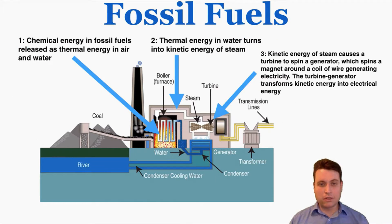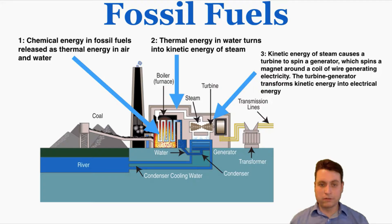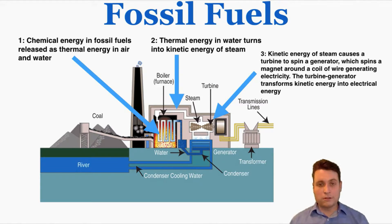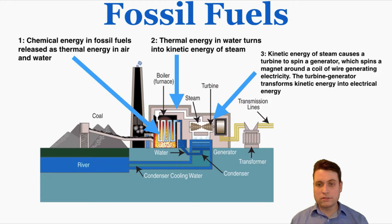This chart shows the different steps of a fossil fuel power plant and how energy is transformed inside. It starts with chemical energy in fossil fuels being released as thermal energy. We burn the fossil fuels to convert the chemical potential energy into thermal energy. That thermal energy heats water and turns it into steam, and the kinetic energy of the steam causes the turbine of a generator to spin, which spins a magnet around a coil of wire, generating electricity. This is actually how almost all of our electricity is generated.